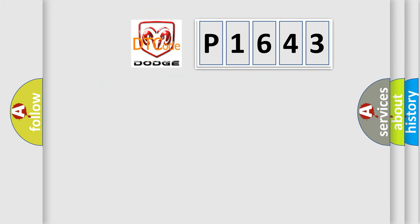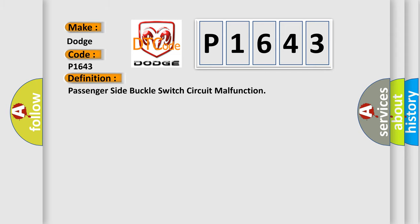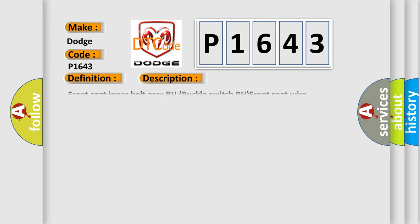So, what does the diagnostic trouble code P1643 interpret specifically for Dodge car manufacturers? The basic definition is: Passenger side buckle switch circuit malfunction. Here is a short description of this DTC code: Front seat inner belt RCRH buckle switch, RH front seat wire, RH occupant classification AQ.